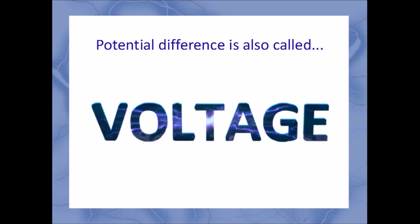If you've ever heard the phrase 'high voltage,' this is where it comes from. Anytime you have a voltage, you have electricity. Potential is measured in joules per coulomb — energy per charge — and voltage has those same units, which gives us a nice formula: V equals delta U divided by Q, where delta U is the energy difference between two points in an electric field and Q is our symbol for charge.